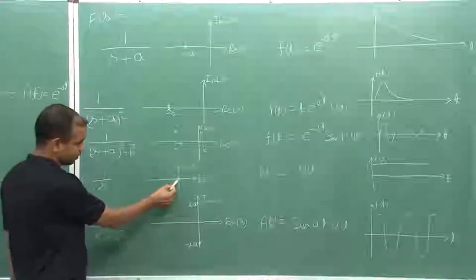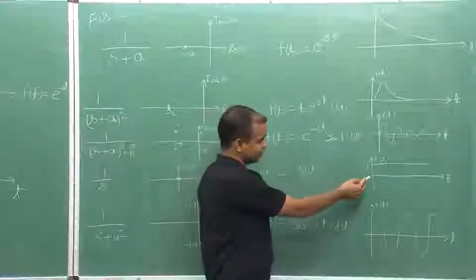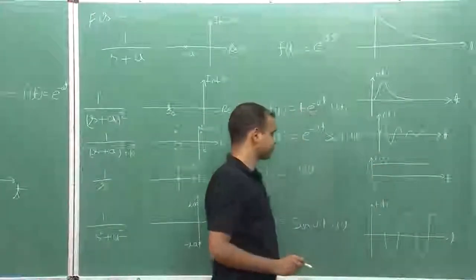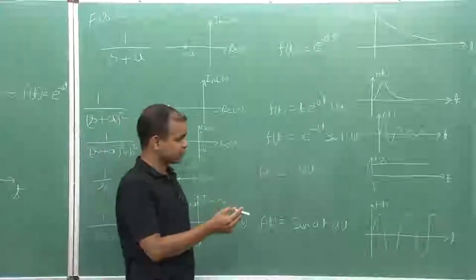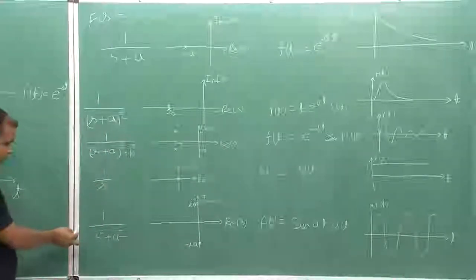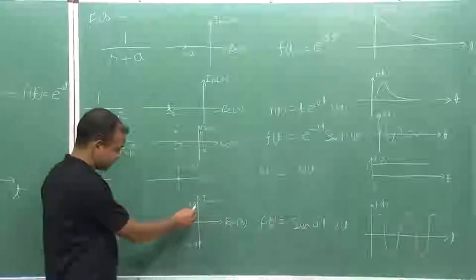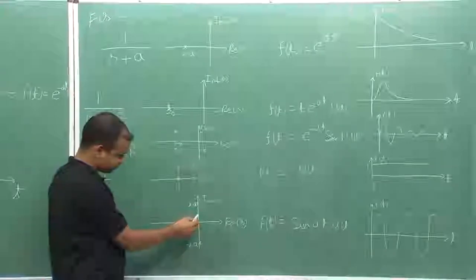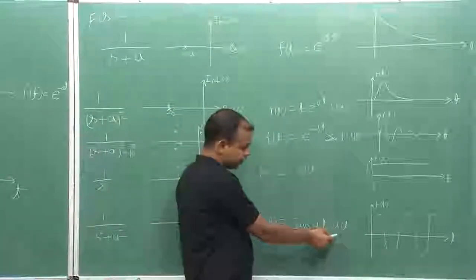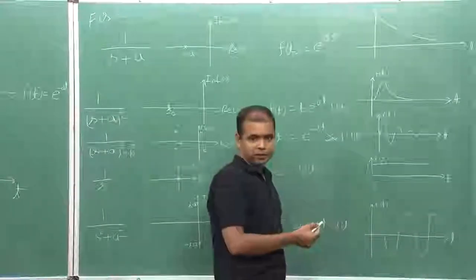For 1/s, I have one pole at the origin; the response is u(t) and the system is marginally stable because it is not tending to zero and it is not diverging either. If I have the transfer function 1/(s² + a²), I have two complex conjugate poles on the imaginary axis. In the time domain it will be sin(at)·u(t), oscillating between two finite values, and we call the system marginally stable.